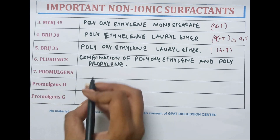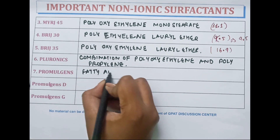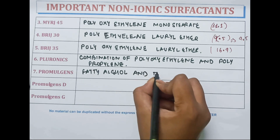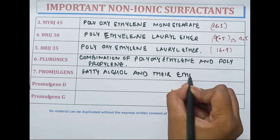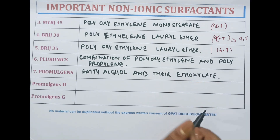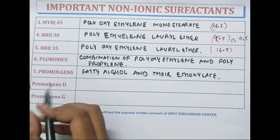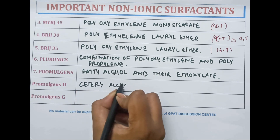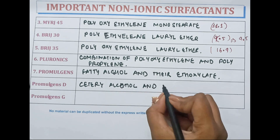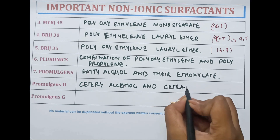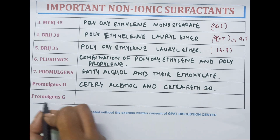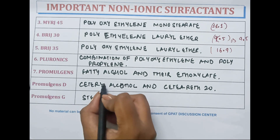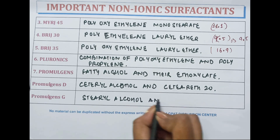Promulgens are fatty alcohols and rare ethoxylates. Promulgens D is cetyl alcohol and Tween 20. Promulgens G is stearyl alcohol and Tween 20.